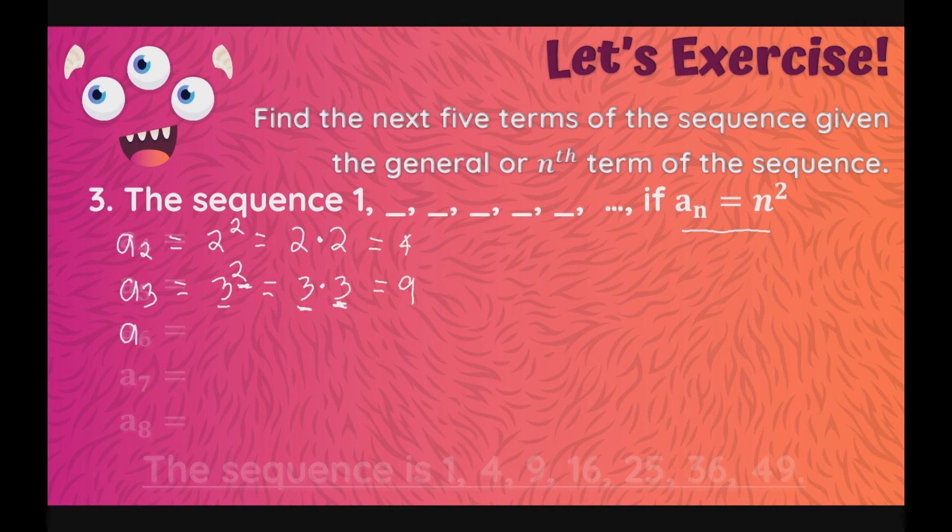How about a sub 4? Magiging 4 ang ating base. Exponent is still the same, 2. So, magiging 4 times 4, which is equal to 16. Now, a sub 5 is equal to 5 raised to 2, which is equal to 5 times 5. And, 5 times 5 is 25.